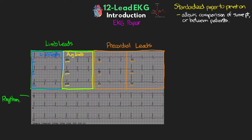At the bottom we have our rhythm lead, running full length across the bottom — typically lead 2, though this can be changed in the settings. We can also have multiple full-length rhythms showing across the bottom. Typically we'll have time marks or hashes at the top or bottom of the paper. The total length of the rhythm strip is 10 seconds, so we should have two 3-second marks and a 4-second mark. These marks, along with the big and small boxes, help us determine the rate of the patient's rhythm. Remember: 25 millimeters, or five big boxes, equals one second of time moving left to right.